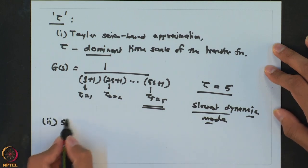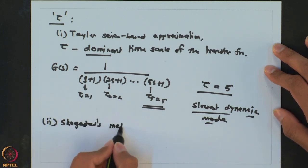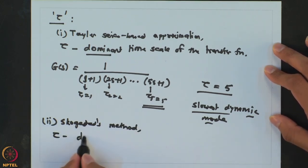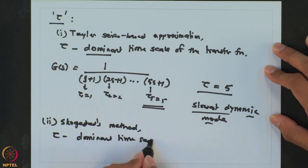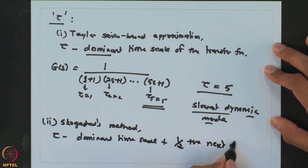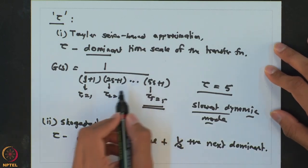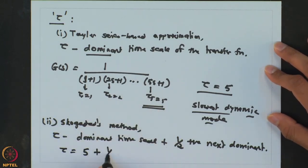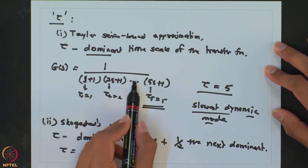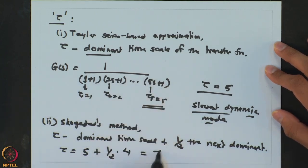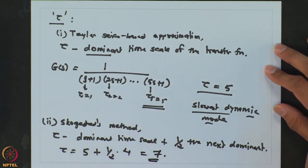In the case of Skogestad's method, tau is taken as the dominant time scale plus half of the next dominant one. We are not relying only on the slowest time scale but looking at the top two slow time scales. For the example (s+1)(2s+1)(3s+1)(4s+1)(5s+1), tau = 5 + half of 4 = 7. The tau obtained by Taylor series expansion and Skogestad's method will therefore be different — Skogestad's method gives a higher tau value.